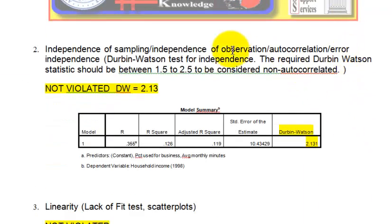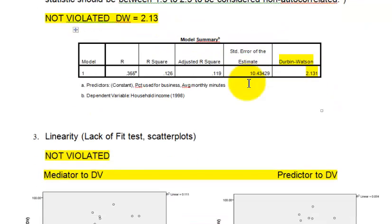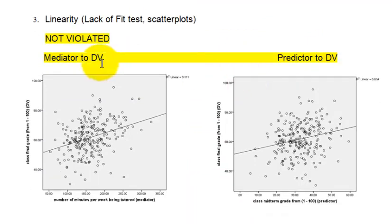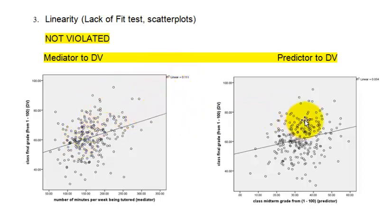The second assumption is Durbin-Watson autocorrelation. It was between 1.5 and 2.5, so we did not violate that assumption. For linearity — that's the relationship between each predictor variable and the DV — the correlations are not zeros, which means we do have a linear relationship between each predictor and the DV, including the mediator. That assumption has not been violated.